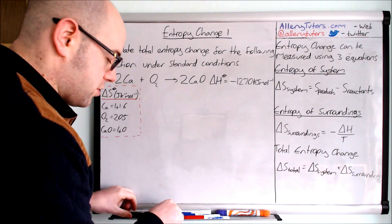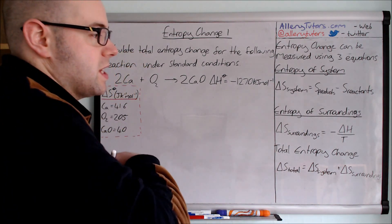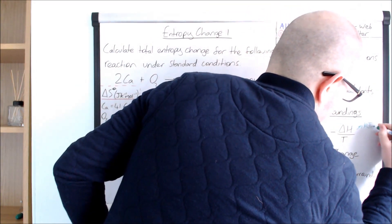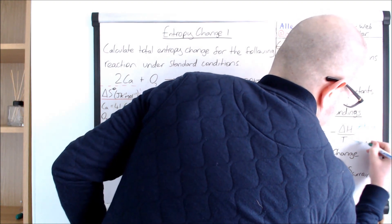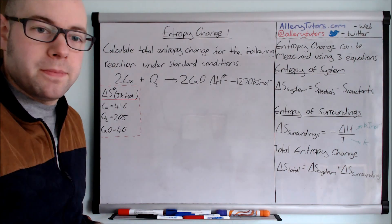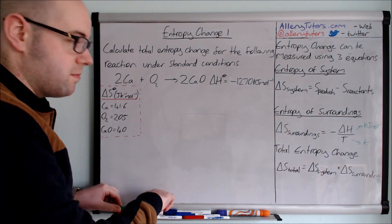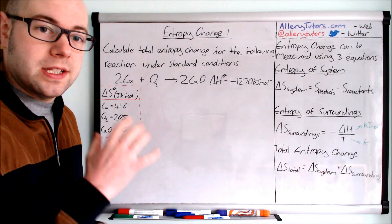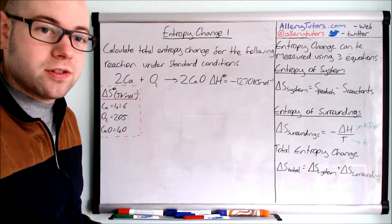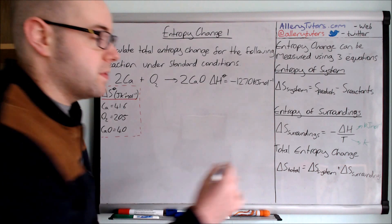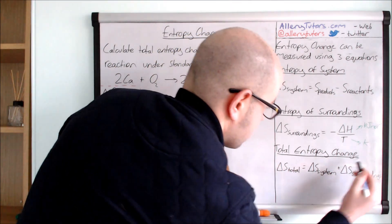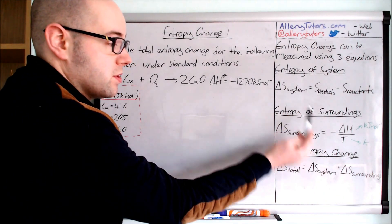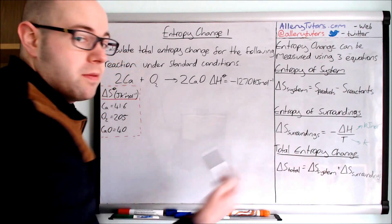Just to clarify the units: delta H is measured in kilojoules per mole and the temperature has got to be in Kelvin — that's really important. Once we've done that, we take these two values and work out the entropy of the whole thing. The third equation is the total entropy change: delta S total equals the entropy of the system plus the entropy of the surroundings.